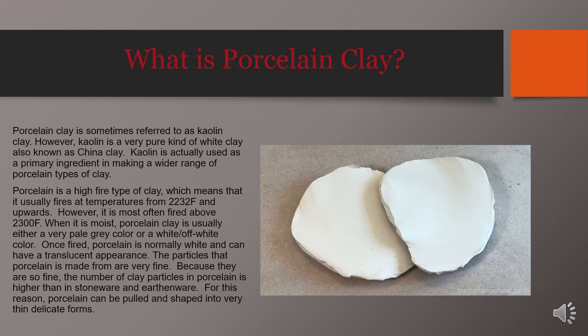Porcelain clay is also referred to as kaolin clay. Kaolin is a very pure kind of white clay, also referred to as china clay, and is the primary ingredient in making a wide range of porcelain types. Porcelain is a high-fire type of clay, firing at 2032 degrees Fahrenheit and upwards. When moist, porcelain clay is usually very pale gray, white, or off-white. Once fired, porcelain is normally white and can have a very translucent appearance. The particles that porcelain is made from are very fine and refined, meaning the number of clay particles in porcelain is higher than in stoneware and earthenware, allowing it to be pulled and shaped into very thin and delicate forms.